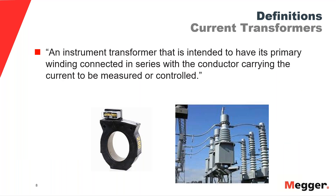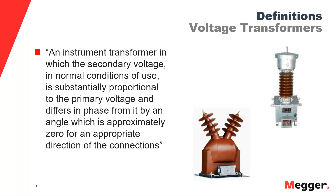What is an instrument transformer? These devices are intended to transmit an information signal to either a measuring device or circuit or a protective or control device. The instrument transformer is intended to have a secondary circuit with a definite and known portion of the current or voltage in the primary circuit to which they are connected. That secondary quantity — either voltage or current — should have a phase relationship with respect to the primary.